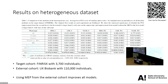We conducted experiments on simulation datasets and real-world datasets, including homogeneous and heterogeneous settings. Here I show results on the heterogeneous dataset. The target cohort is a Finnish dataset with fewer than 4,000 individuals, for which we have individual-level data. The external cohort is a British cohort from the UK Biobank with more than 100,000 individuals, but we assume only GWAS summary statistics are accessible.